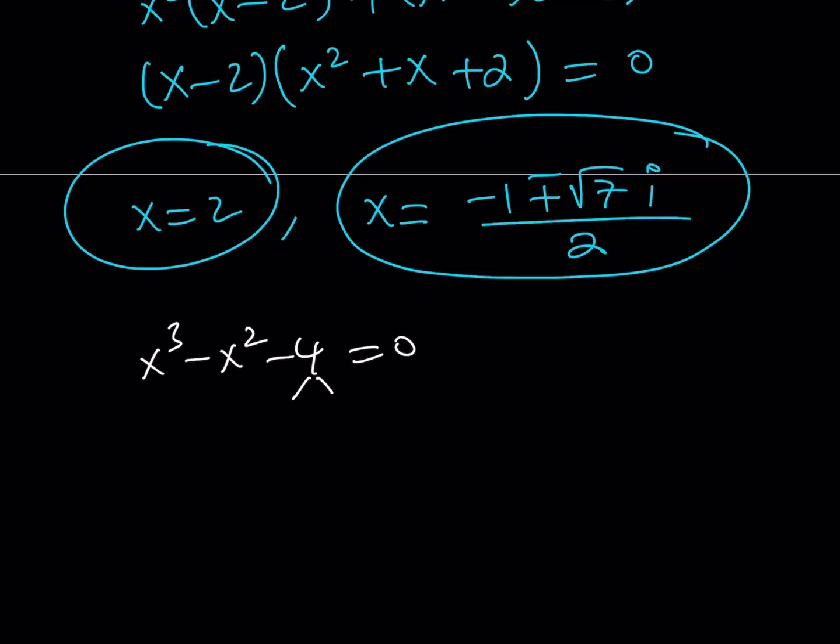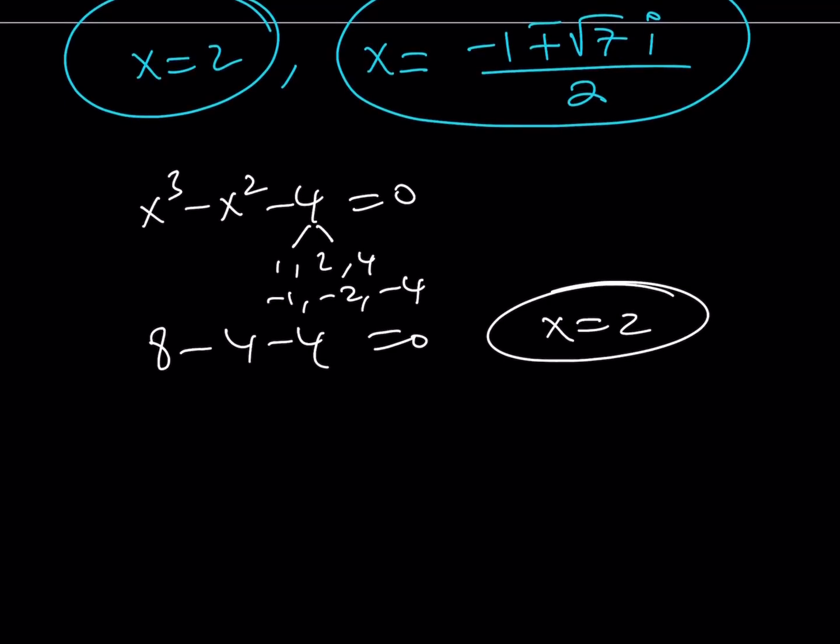So we're looking for factors of 4, and there's only a limited number like 1, 2, 4, and their opposites, right? So we can test these out. And if you test out 2, you're going to notice that 8 minus 4 minus 4 is equal to 0. So x equals 2 is a candidate, right? It is a solution. Since x equals 2 is a solution, I can just go ahead and divide it by x minus 2, and so on and so forth. So I can also approach the problem from this angle. Let's go ahead and take a look at the graph now and see what that looks like.